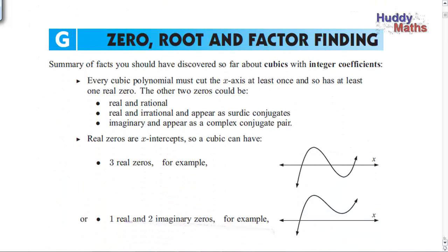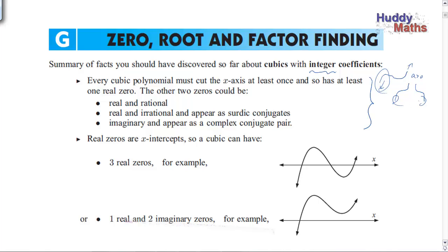So here we are - screen clippings from Hayes & Harris Publications, their specialist maths book. It's zero, root and factor finding. We've got some facts here about cubics which have got whole number or integer coefficients. Every cubic polynomial must cut the x-axis at least once, and so has at least one real zero. If the leading coefficient is greater than zero, for large positive x it goes up and for large negative x it goes down, so clearly there's a cut there - or even if it's got a point of inflection, it's going to cut the x-axis.